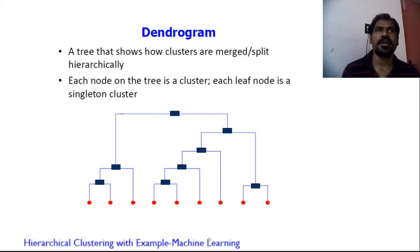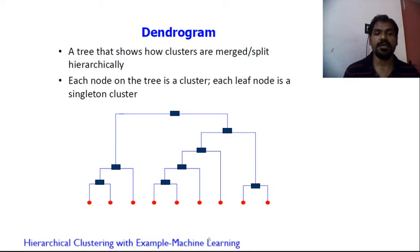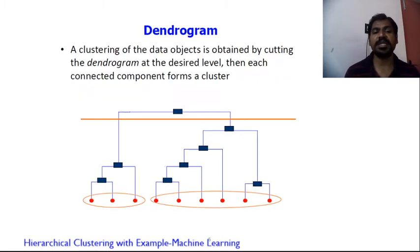Hierarchical clustering is pictorially represented using a dendrogram. A dendrogram draws a tree that shows how clusters are merged or split hierarchically. Each node on the tree is a cluster; each leaf node is a singleton cluster. You can see how nine individual objects are merged step by step into a complete cluster. By cutting the dendrogram at the desired level, each connected component forms a cluster.